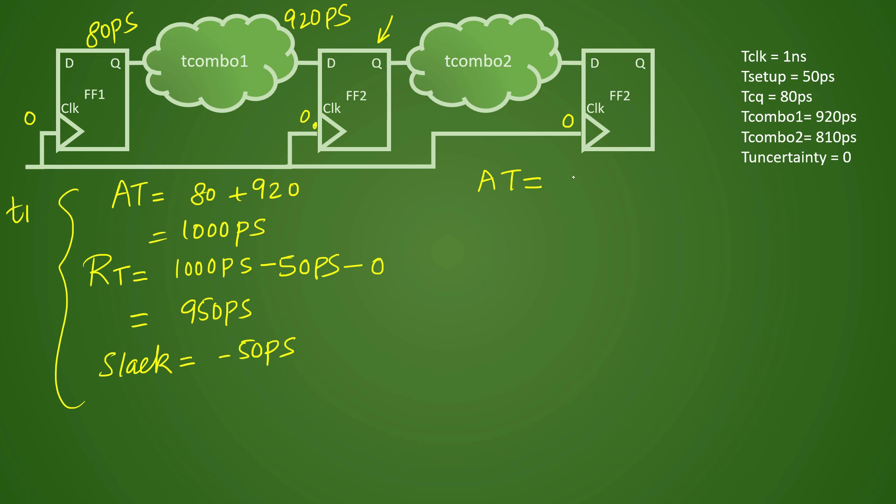So arrival time is, how much will it be? TCQ is 80 picoseconds, and then T combo 2 is 810 picoseconds. And it will come out to be 890 picoseconds.